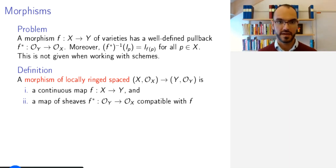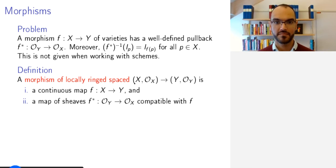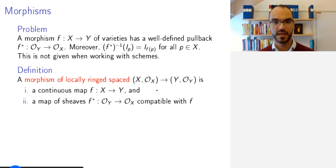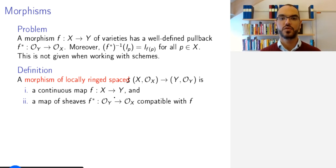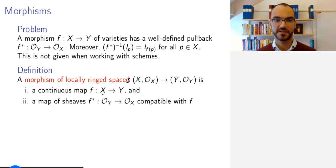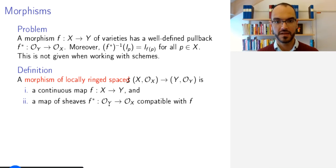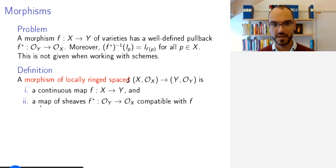Remember that a scheme in particular is a locally ringed space, meaning it is a ringed space with a structure sheaf such that the stalks are local rings. We want a morphism of locally ringed spaces to be two things: first, a continuous map of topological spaces from X to Y — that is straightforward — and second, a map of sheaves in the other direction, compatible with f. I need to explain what I mean by a map of sheaves and what I mean by compatible with f.